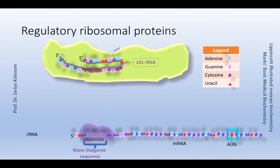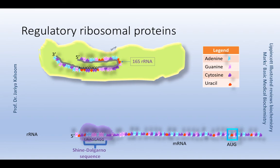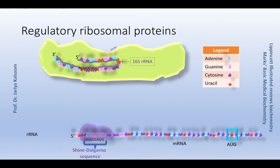Operons for ribosomal proteins can be inhibited by excess of their own protein products. Translation of the polycistronic RNA of each operon may be inhibited by a specific ribosomal protein, or R protein. The R protein binds to the Shine-Dalgarno sequence on messenger RNA upstream of the initiator codon, thus acting as a physical barrier and preventing the binding of the small ribosomal subunit to the Shine-Dalgarno sequence. Thus, one R protein prevents the synthesis of all the R proteins regulated by an operon. The same R protein binds ribosomal RNA with higher affinity than messenger RNA, but if levels of ribosomal RNA fall, it binds its own messenger RNA and stops its translation. This coordinated regulation keeps the synthesis of R proteins in balance with transcription of ribosomal RNA so that each is present in appropriate amounts for the formation of ribosomes.